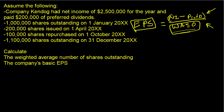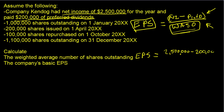A company had net income of $2.5 million for the year and paid $200,000 in preferred dividends. These dividends go to preferred shareholders, not common shareholders, so we take them out. In our EPS calculation, we have net income of $2,500,000 minus $200,000 of preferred dividends for this basic EPS.